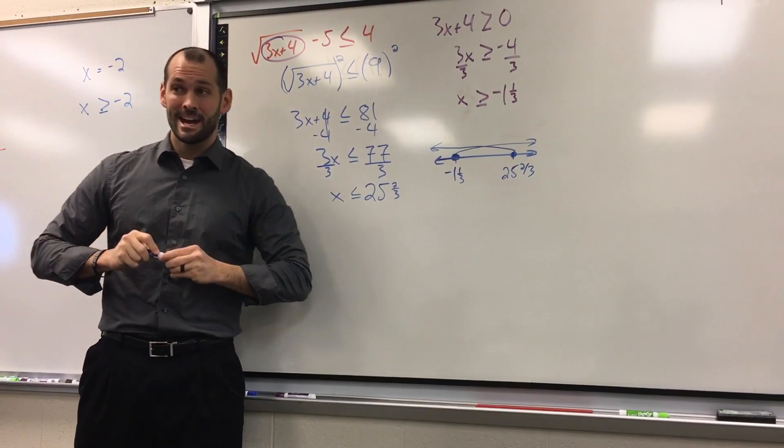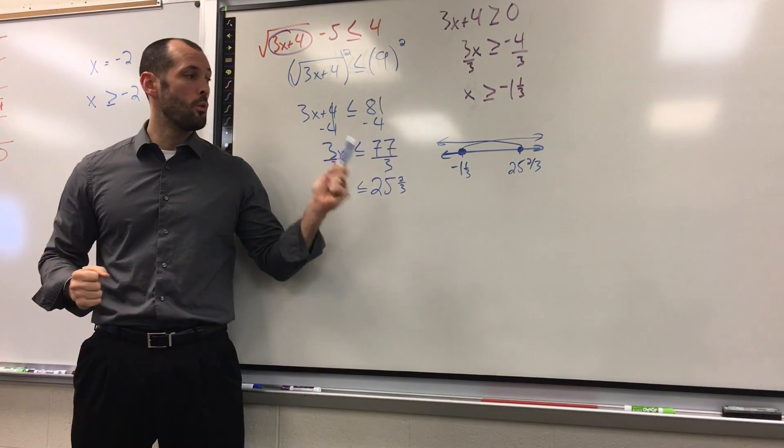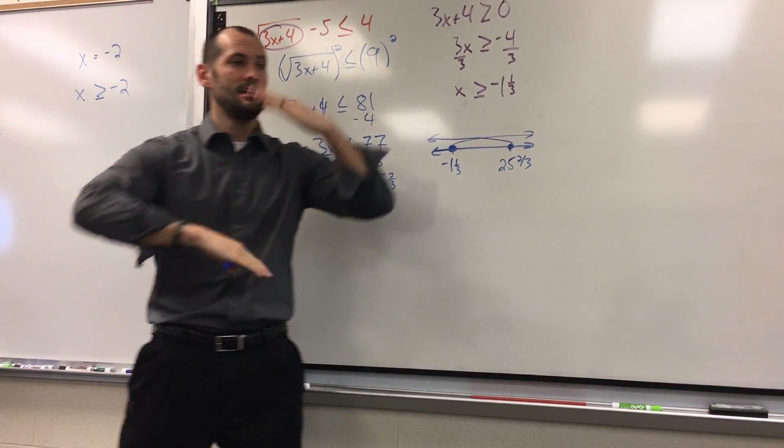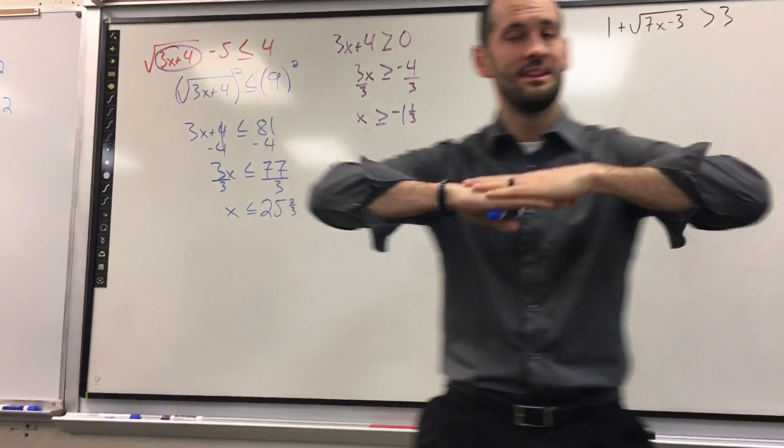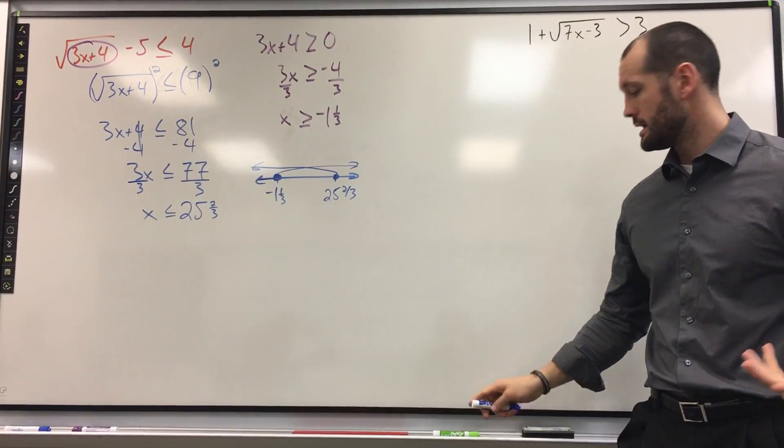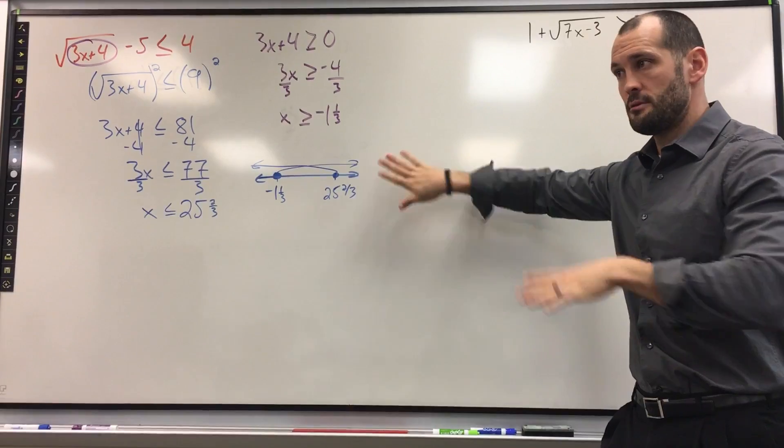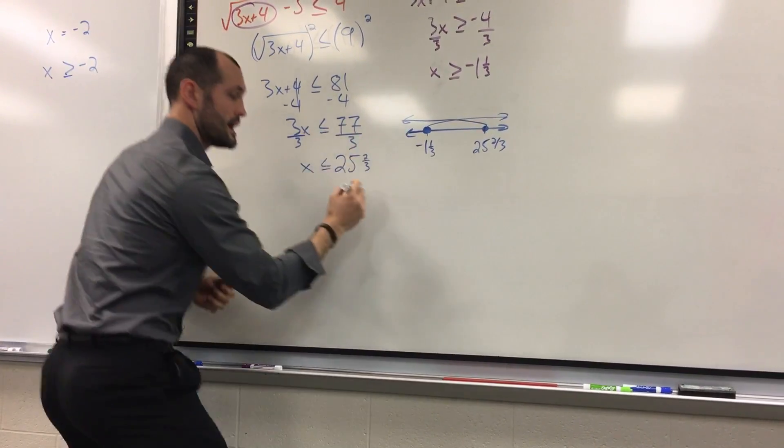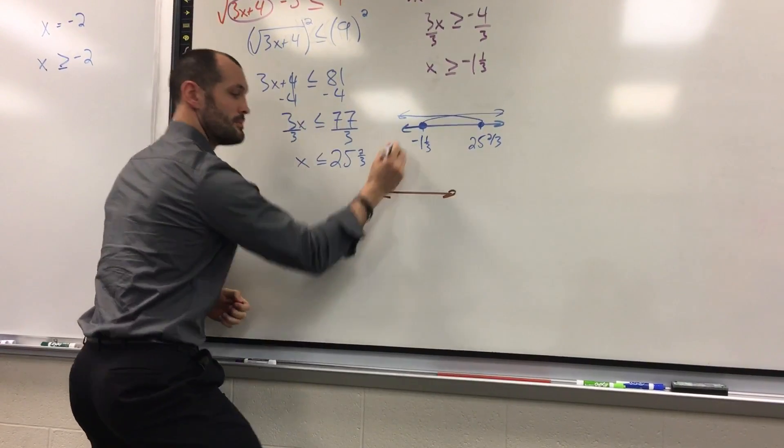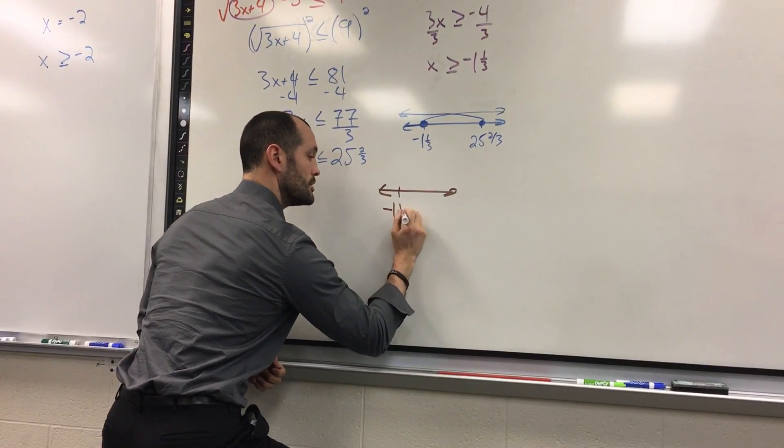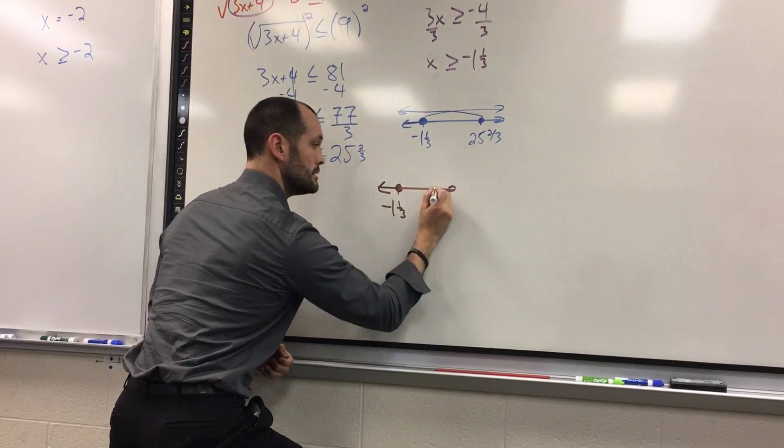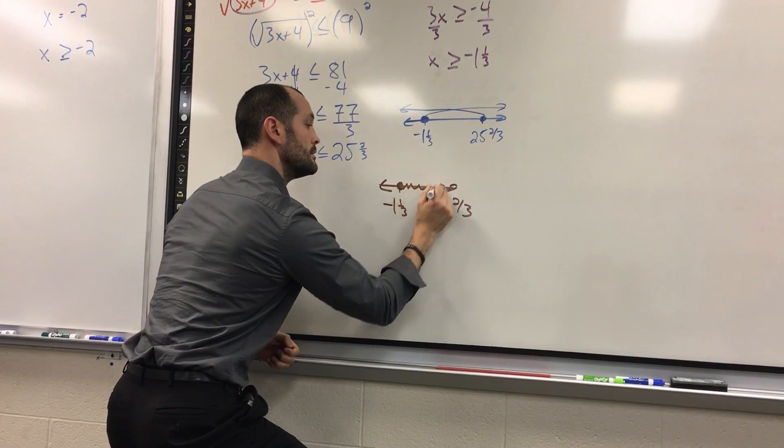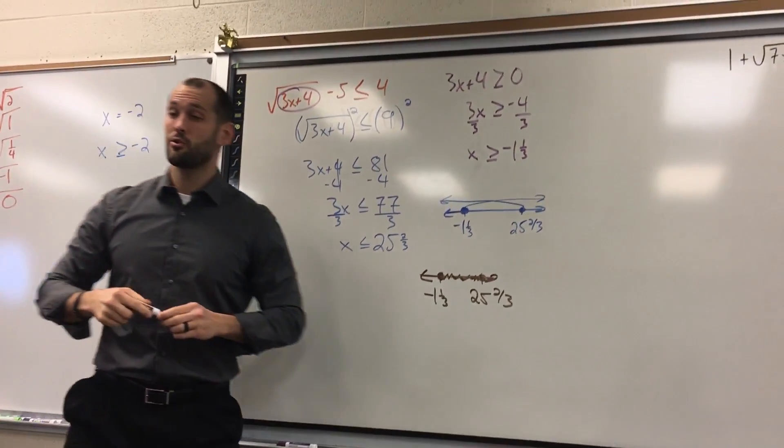Now, pause and reconsider. We mentioned it's an and, meaning we have to satisfy both of these conditions. Where are we satisfying both conditions? In the middle. What you look for tonight. The overlap. The overlap is where your answers are actually going to lie. So remember I said this is a scrap graph, not my final answer. My final answer only highlights what I conclude is my answer. So my answers lie from negative one and one third closed circle to twenty-five and two thirds closed circle. And that's my final graph answer.